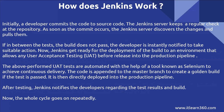Let's understand the complete workflow of Jenkins — how Jenkins works and how developer and tester teams work. All team members are connected at one place in Jenkins. Initially a developer commits the code to the source code repository. The Jenkins server keeps a regular check on the repository. As soon as the commit occurs, the Jenkins server discovers the changes and pulls them, then checks whether the build is proper or not.